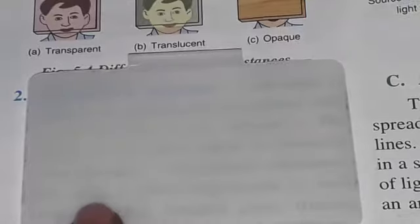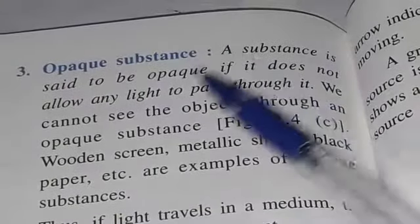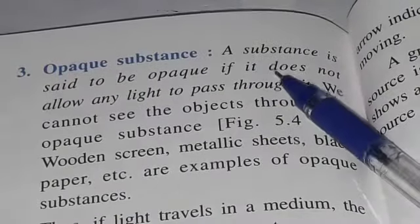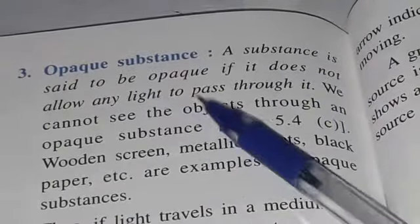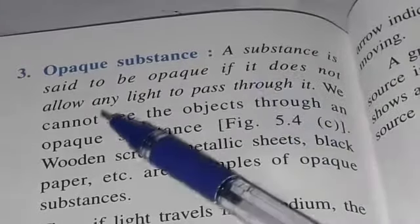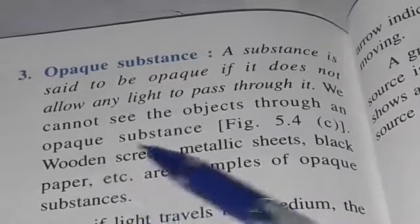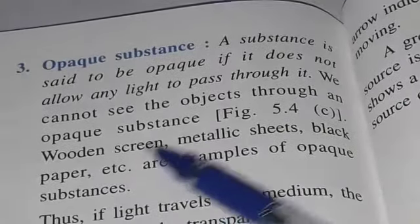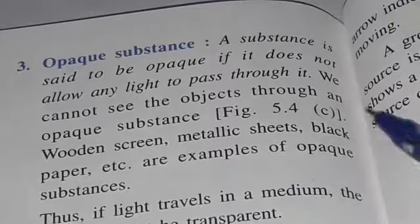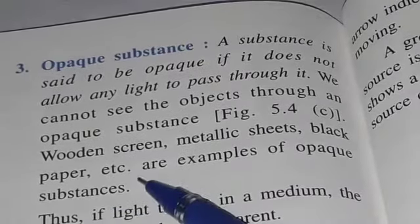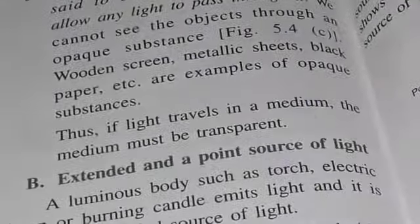This translucent material is not a transparent medium, so you are not able to read the statement through it. Third is Opaque Substance. A substance is said to be opaque if it does not allow any light to pass through it. We cannot see objects through an opaque substance. Wooden screen, metallic sheet, black paper, etc. are examples of Opaque Substance.